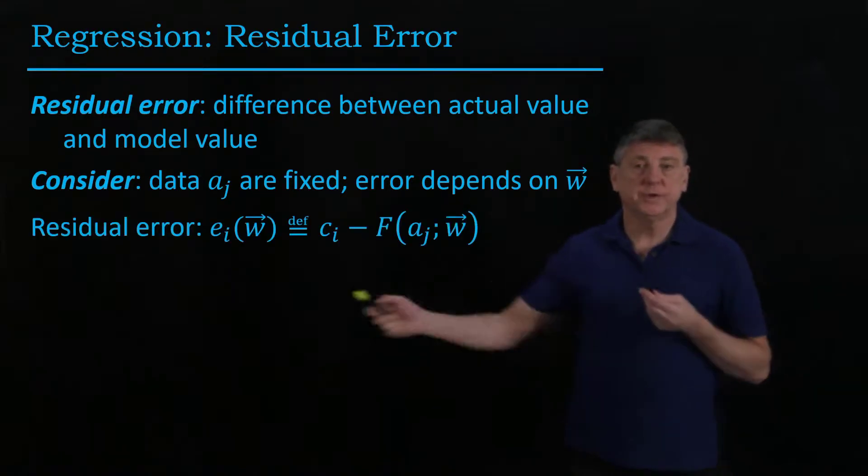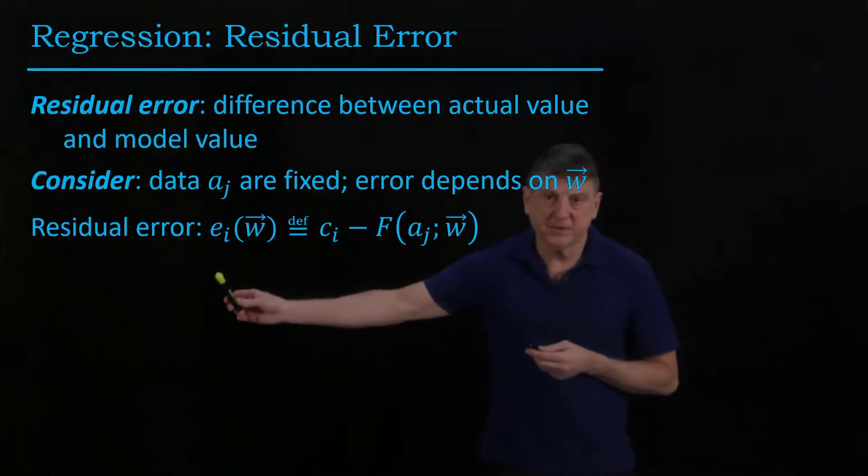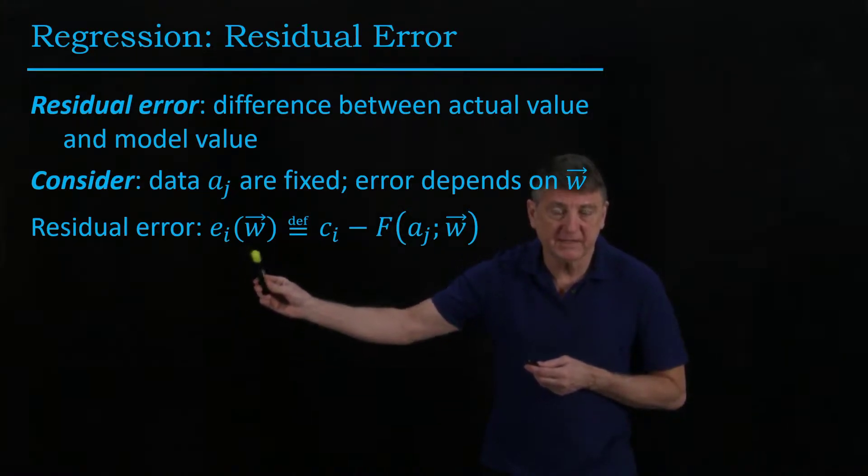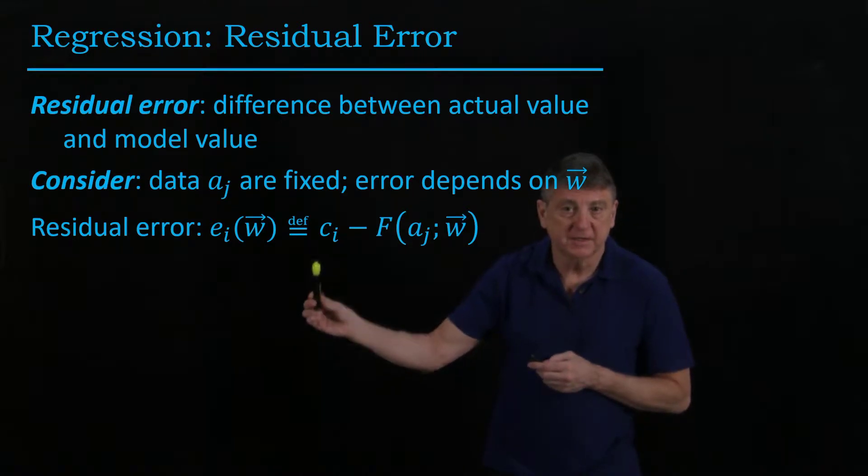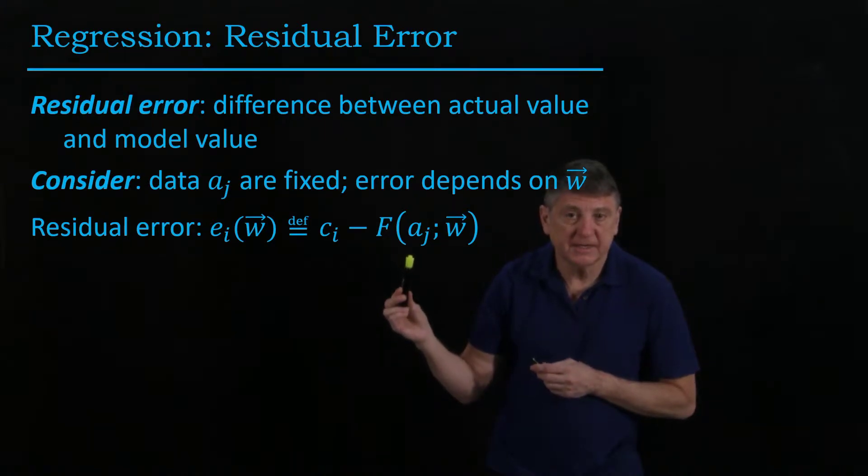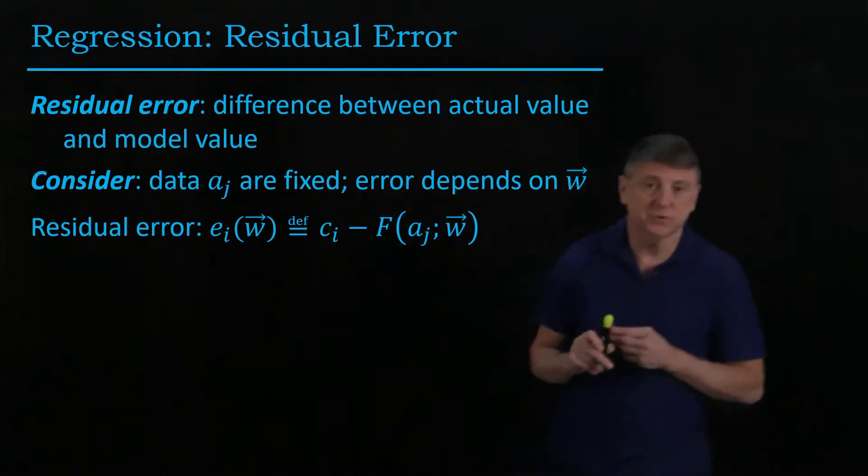So what we'll do is we'll define for the ith observation, we'll define the ith error, which is a function of the weights, as the difference between the dependent value, the dependent observation, and our model of the independent observations and the weight vector that we're using.